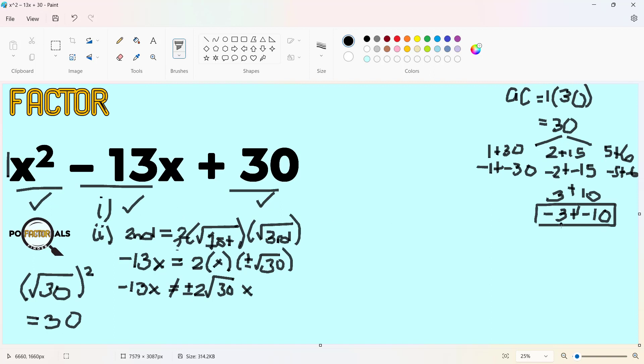We have negative 3 plus negative 10 is negative 13. And when you multiply them, positive 30. We'll be using these coefficients now. If ever none of these 8 will satisfy that condition for AC method, then our given polynomial is non-factorable. But here, since we have those coefficients, we'll be using them here.